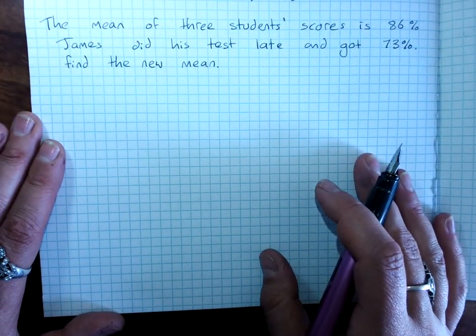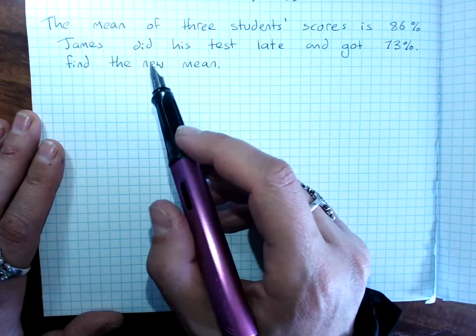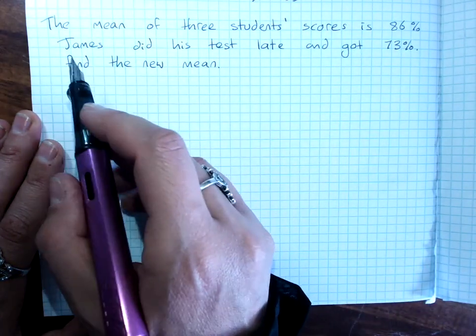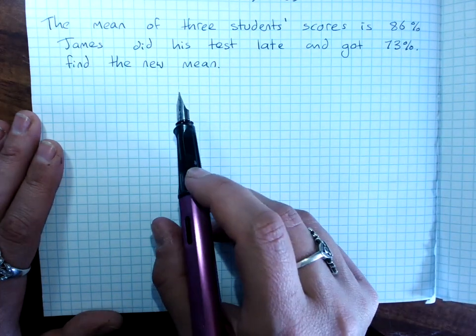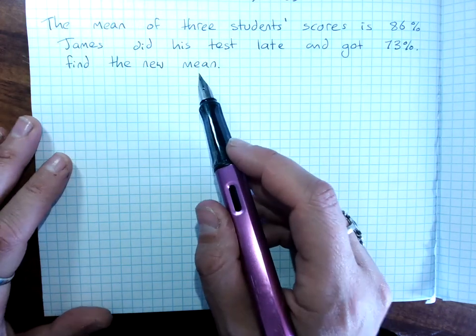The mean of three students' scores is 86. James did his test late, so he's the fourth person. And got 73%. And so, now we've got to add James' measure into the class, find the new mean.